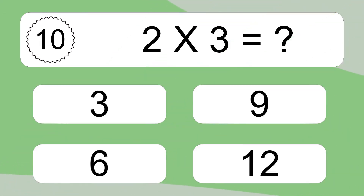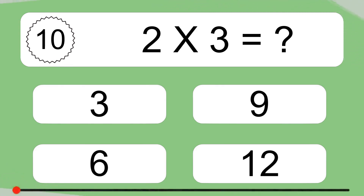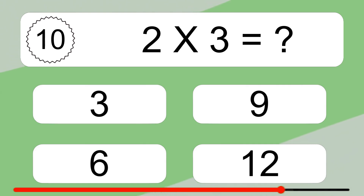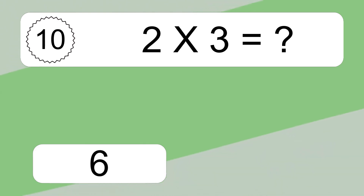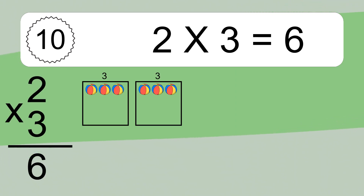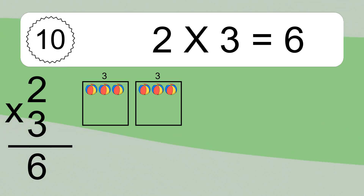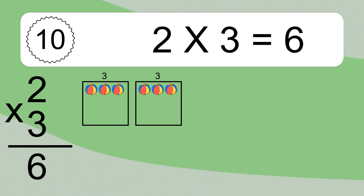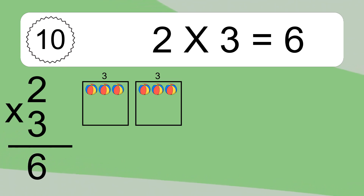2 times 3 equals what? 2 times 3 equals 6. We have 2 boxes, and each box has 3 colorful balls inside. If you count all the balls in all the boxes together, you will have 2 times 3 balls. This equals 6 balls.